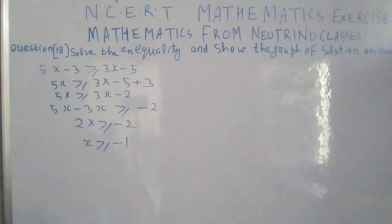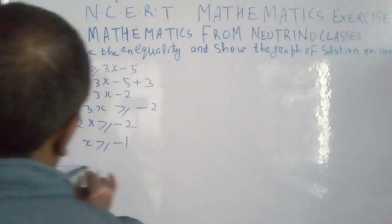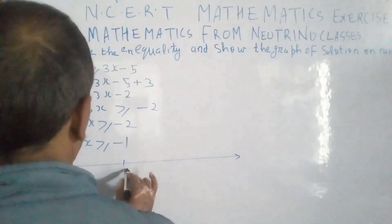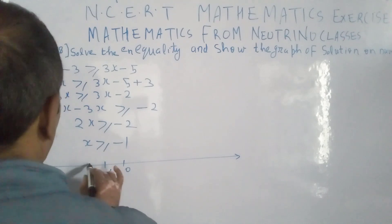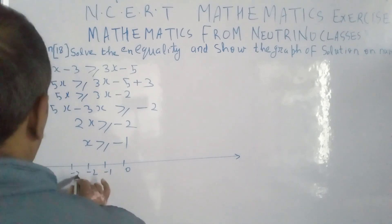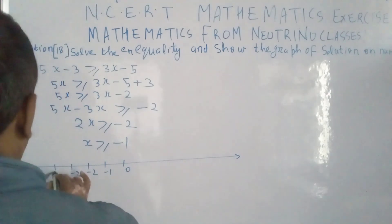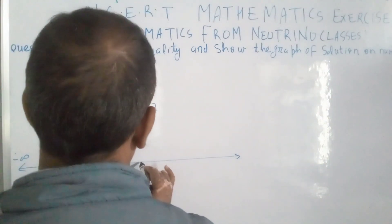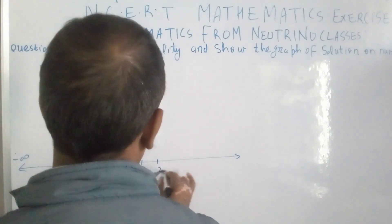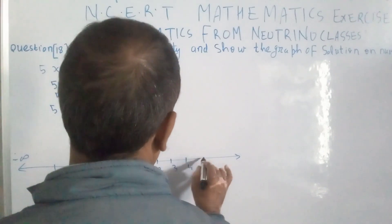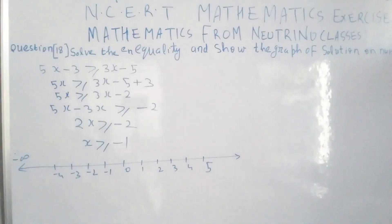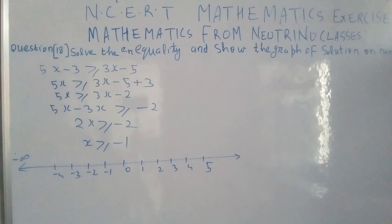Now we draw the number line. We mark 0 in the middle, then minus 1, minus 2, minus 3, minus 4, minus 5 to the left, and 1, 2, 3, 4, 5 to the right. The solution is x greater than or equal to minus 1.